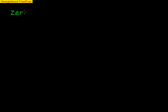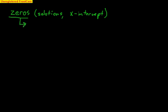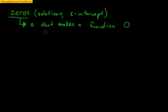When talking about polynomials, we want to talk about what zeros are. Zeros are really important in pre-calculus. Another word for zeros is solutions, and another word is an x-intercept — an x-intercept is the same thing as a zero. A zero is simply a value a that makes a function equal to zero, so whenever f(a) equals zero, you have a zero.